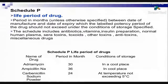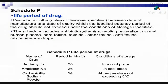Schedule P, which we already discussed briefly in a previous session. Schedule P is related to the life period of the drug — the period in months, unless otherwise specified, between the date of manufacture and date of expiry, which is the labelled potency period. This period should not exceed the limit under the specified storage conditions.